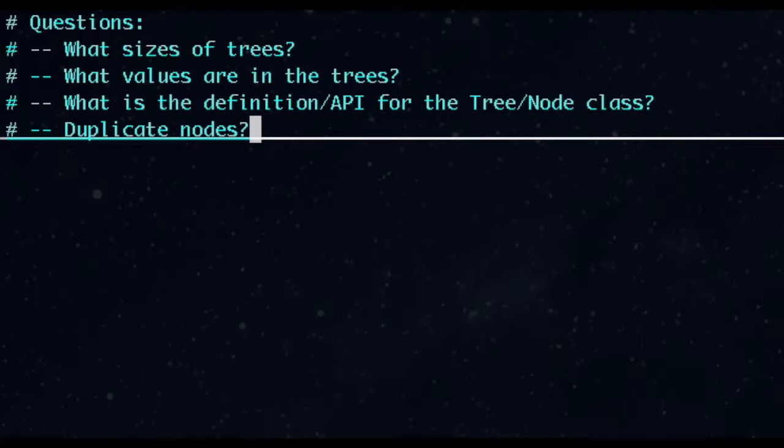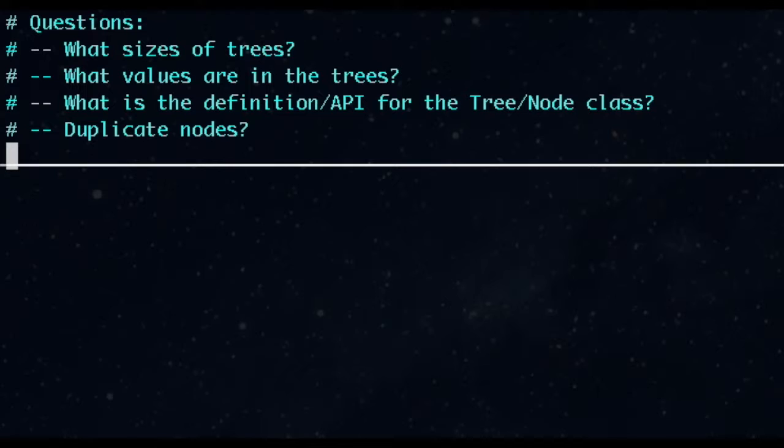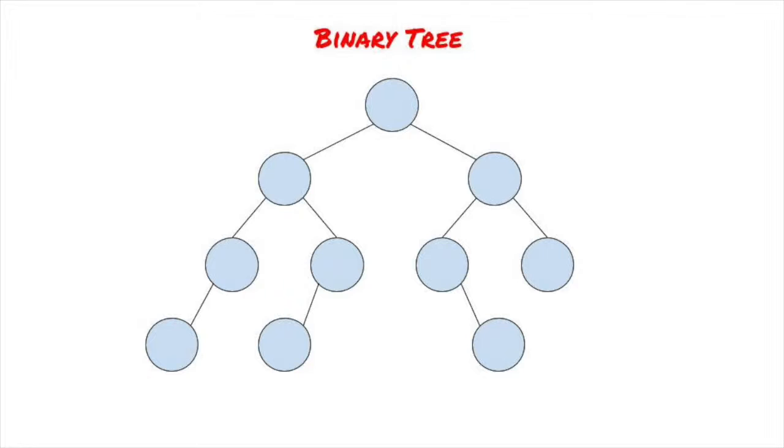Does the tree contain duplicate nodes? For our purposes, we'll assume that the trees may be large but fit in memory. We'll assume the value is an integer and that the tree nodes have left, right, and value fields. Left and right are none if there's no subtree. We'll also assume node values are unique.